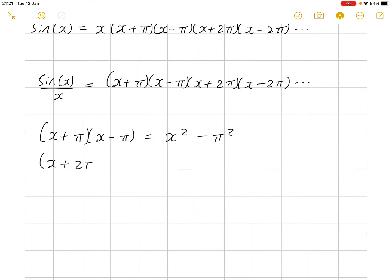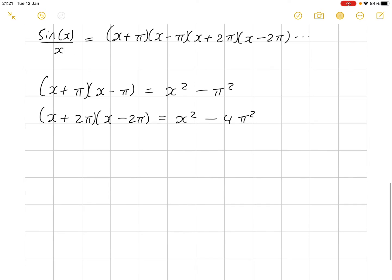And again, x plus 2 pi times x minus 2 pi, this is equal to x squared minus 4 pi squared. And again, for any n, we have x plus n pi times x minus n pi, is equal to x squared minus n squared pi squared. And this is just a property of the difference of two squares. Nothing particularly difficult or challenging.